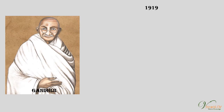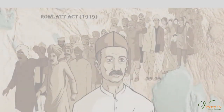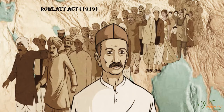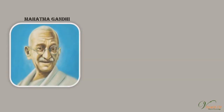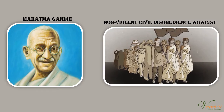Emboldened with this success, Gandhiji in 1919 decided to launch a nationwide Satyagraha against the proposed Rowlatt Act 1919. This act had been hurriedly passed through the Imperial Legislative Council despite the united opposition of the Indian members. Mahatma Gandhi wanted non-violent civil disobedience against such unjust laws, which would start with a hartal on 6th April.